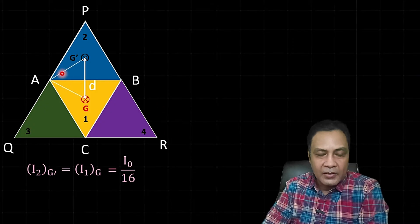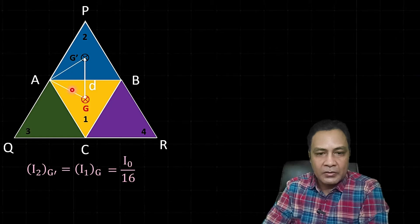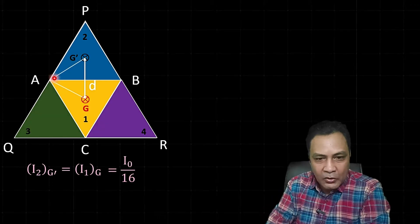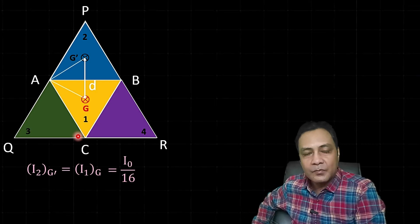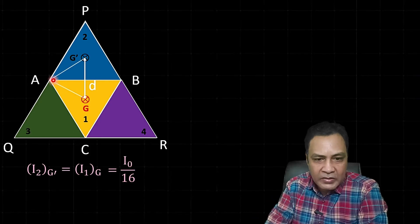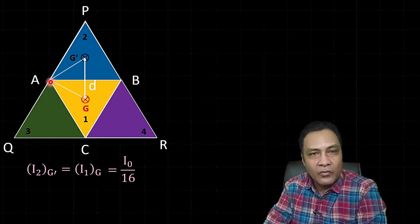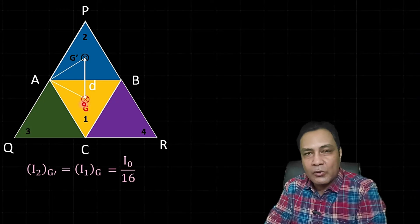Looking at the geometry carefully, the angle is 30°, so the relevant triangle AG'G is also equilateral. In an equilateral triangle of side x, the distance from a vertex to its centroid is x/√3. Triangle ABC has side A/2, so the distance AG equals (A/2)/√3 = A/(2√3). This distance D is also A/(2√3).